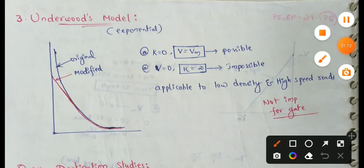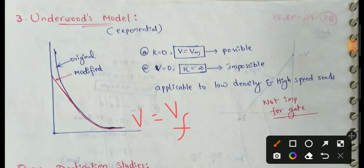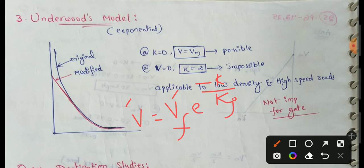Let's check the Underwood's Model equation. Speed v is equal to vf multiplied by e to the power of minus k divided by kj. Here, v is speed, vf is the free flow speed, k is density, and kj is the density corresponding to maximum flow. At maximum flow, k is equal to 0.4 times kj.